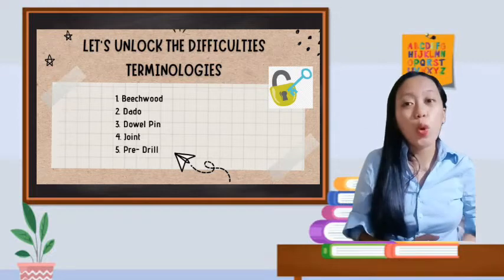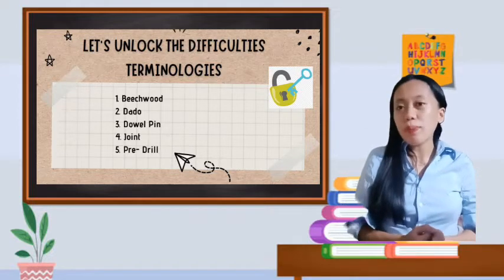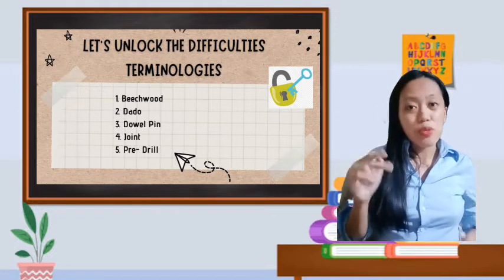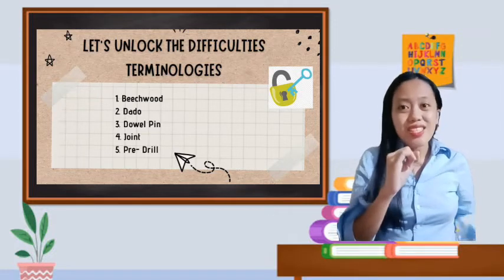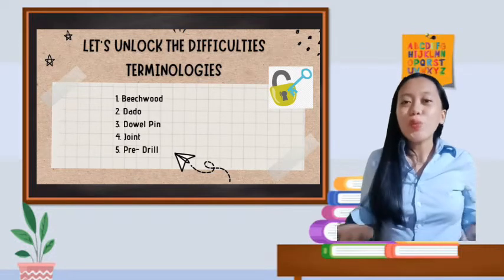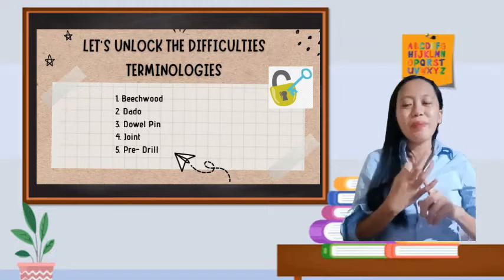Third one, dowel pin. When we say dowel pin, they are industrial fasteners that are used to join two or more items together. They are short cylindrical rods made of various materials including wood, metal, and plastic.